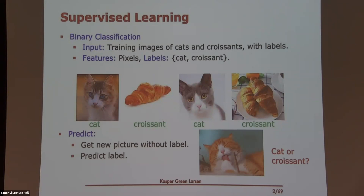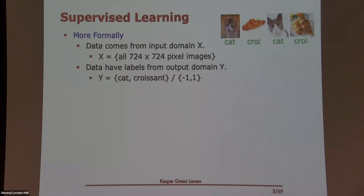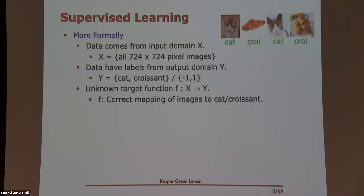More formally, we assume the data comes from some input domain X — for instance, all 724 by 724 pixel images — and the data have labels from some domain Y. For binary classification, think of the labels as minus one and one. We're trying to learn some unknown target function that takes any input in the input domain and maps it to a label. We keep it simple: it's a deterministic function, so for every input element there's a unique label.